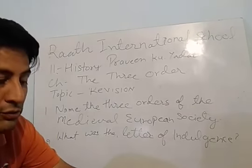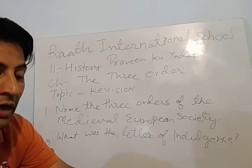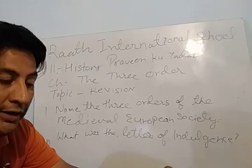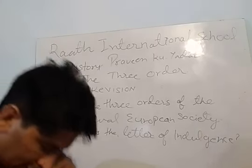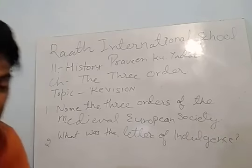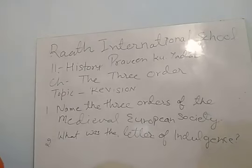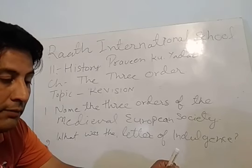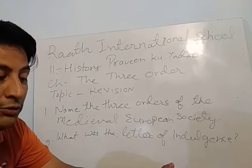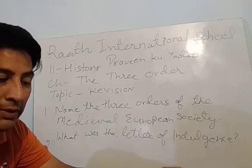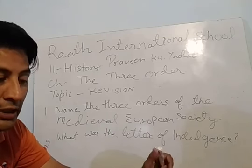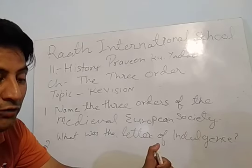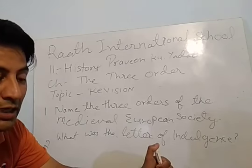The Protestant movement protested that the Church should be free from state law. The Pope interfered with the state's functions. The king's power increased with the rise of the national state, and they wanted to put a check on the Pope's authority. The kings supported the Reformation movement. The clergymen were involved in immoral practices, so people's faith in the Church diminished.